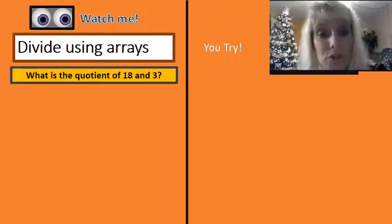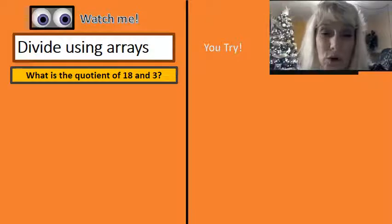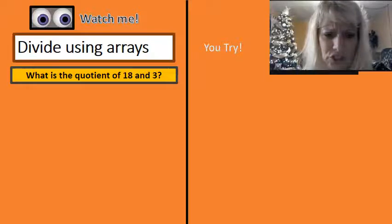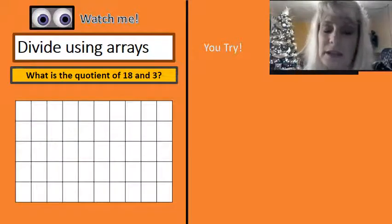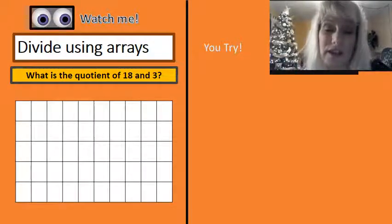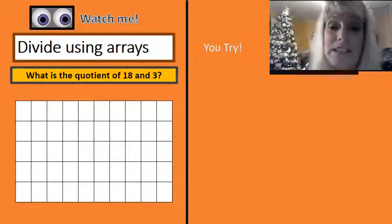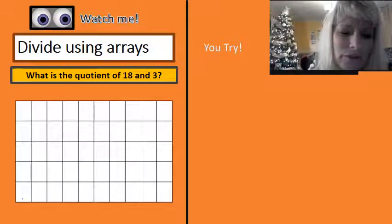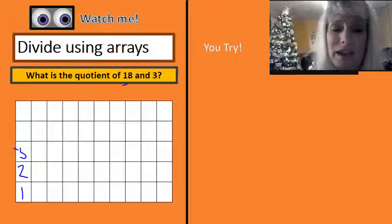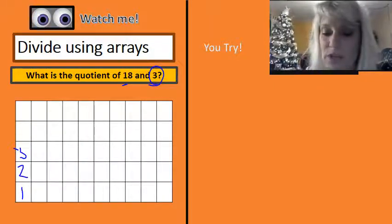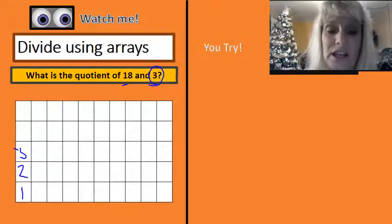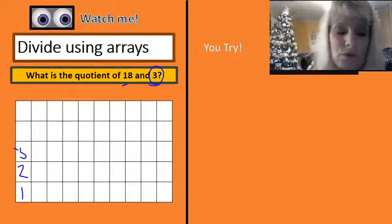When we were learning multiplication, the next thing we did was work with arrays. So we're going to do the very same thing as we're working with division. Notice that this time we're working with some squares, and we use X's. I'm going to say here is one row, two rows, and three rows, because I want to find out what the quotient of 18 and 3 is. I've got my rows set up, and now I'm going to divide 18 into each of those rows.